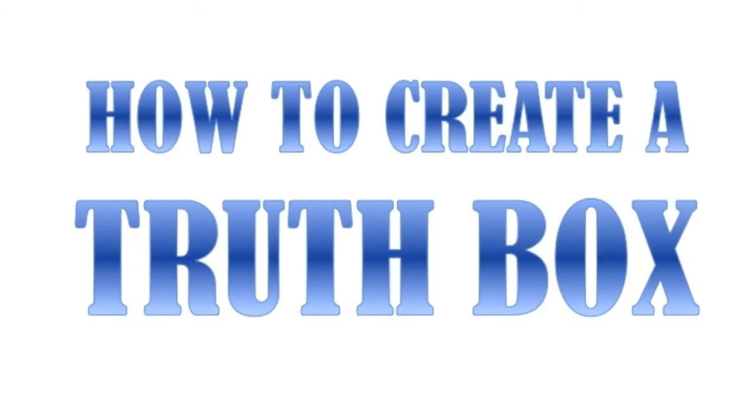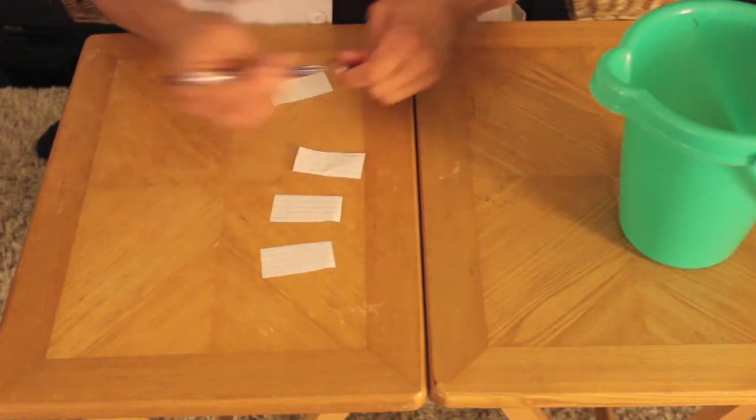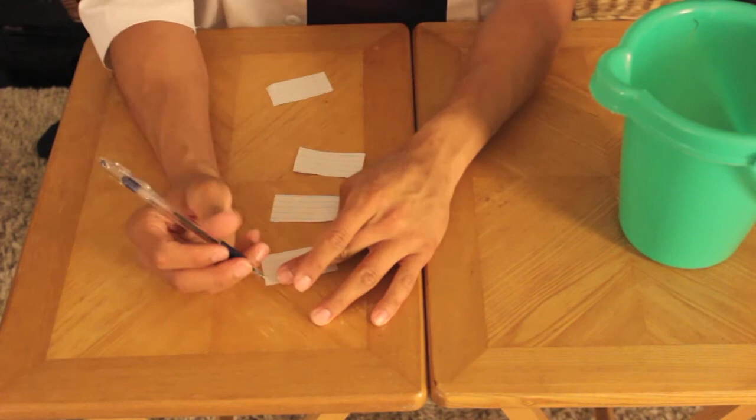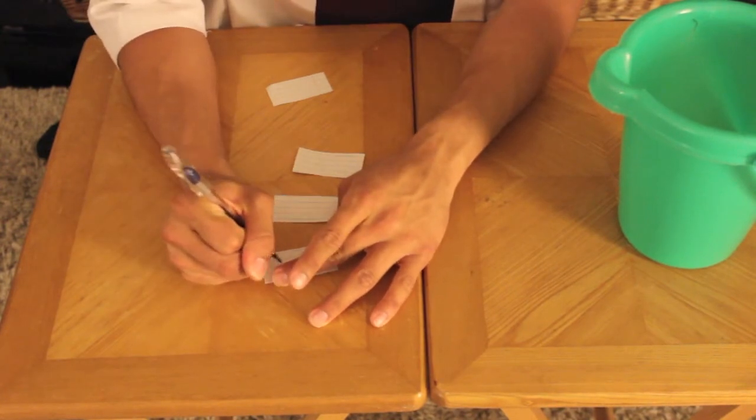How to Create a Truth Box. To create a truth box, simply make each of your players write at least three questions on separate strips of paper.